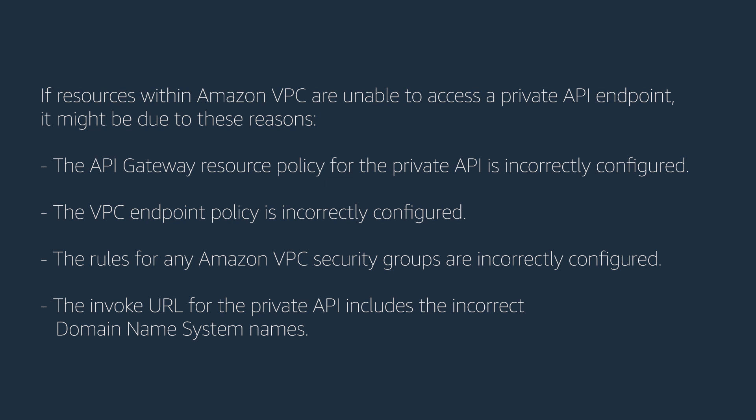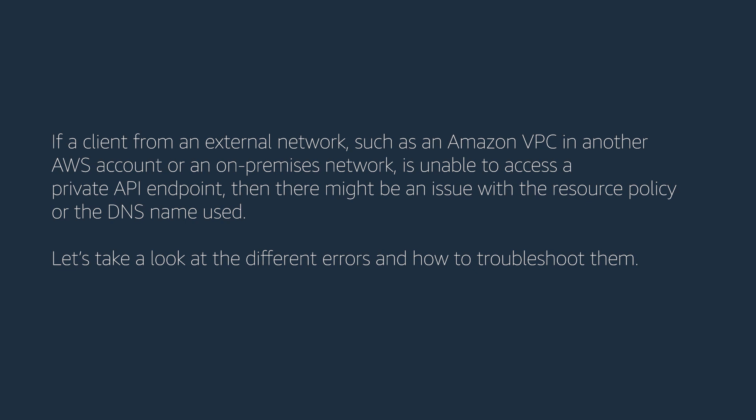If resources within Amazon VPC are unable to access a private API endpoint, it might be due to these reasons: the API Gateway resource policy for the private API is incorrectly configured, the VPC endpoint policy is incorrectly configured, the rules for any Amazon VPC security groups are incorrectly configured, or the invoke URL for the private API includes the incorrect DNS names. If a client from an external network — such as an Amazon VPC in another AWS account or an on-premises network — is unable to access a private API endpoint, then there might be an issue with the resource policy or the DNS name used.